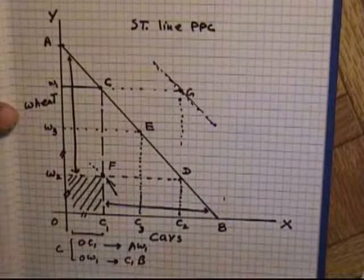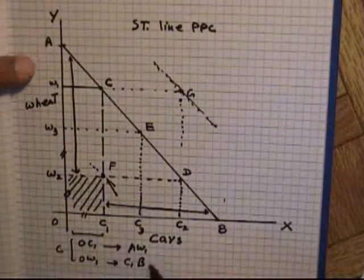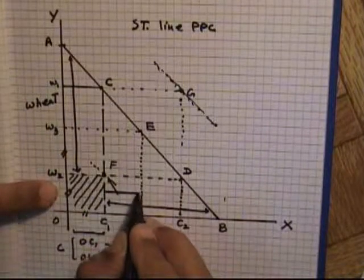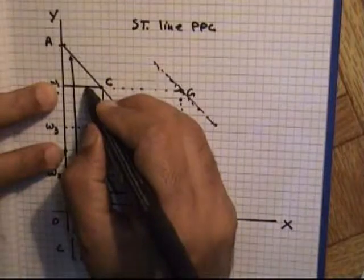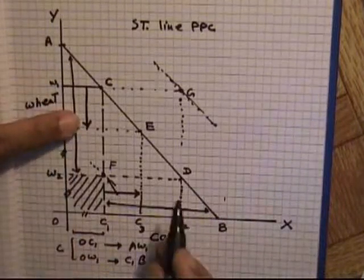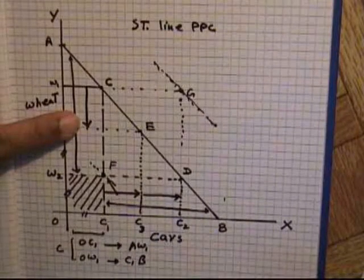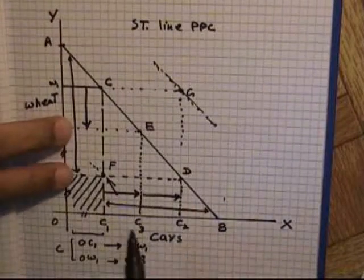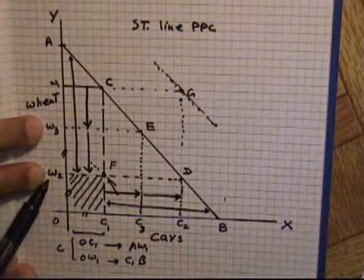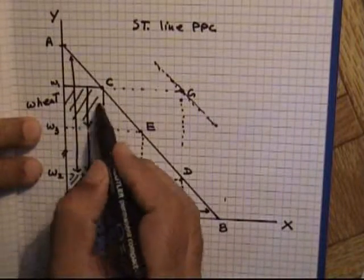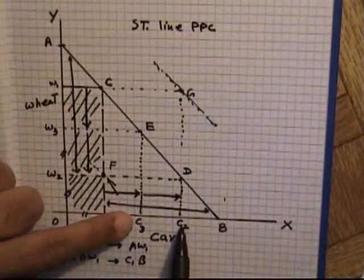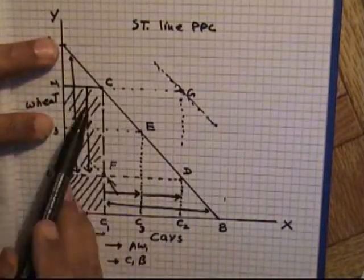In this way, the production possibility curve helps us understand the concept of opportunity cost. If the country increases production from OC1 to OC3, it must decrease wheat production from W1 to W3. If it increases car production from C1 to C2, resources will not be available to produce W2 to W3 of wheat. Notice that this sacrifice remains constant as the country increases production from C1 to C3 to C2 — this constant opportunity cost is due to the straight line production possibility curve.